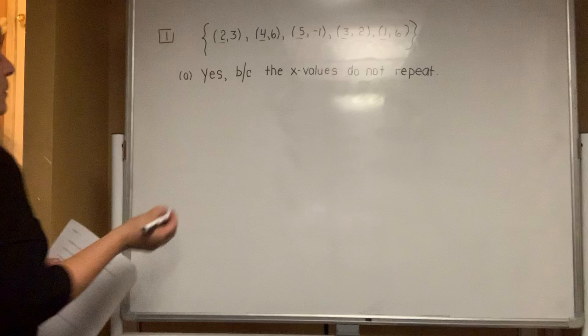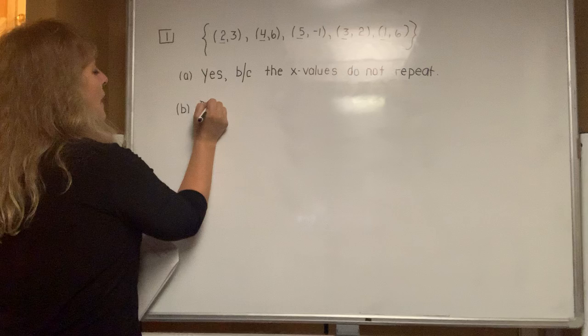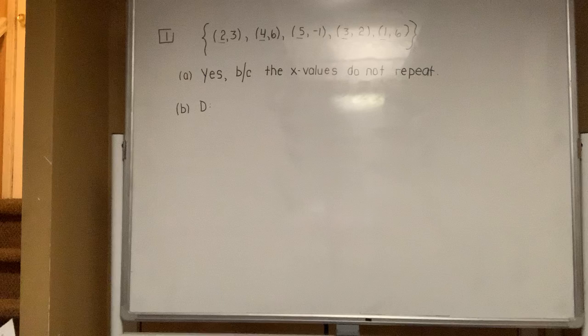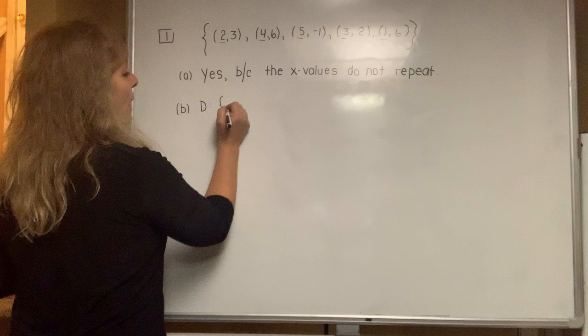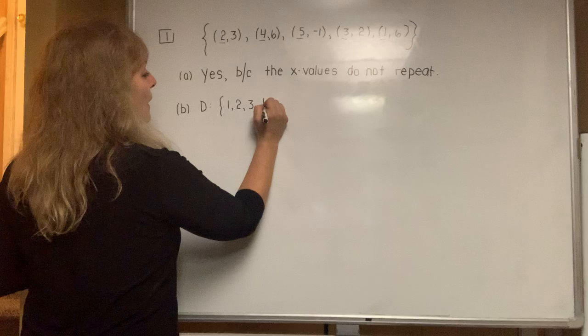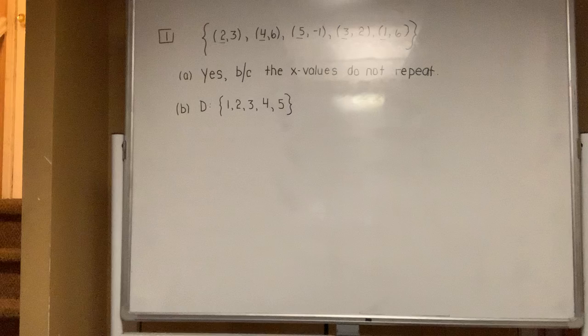Okay, part B, determine the domain of example number one. Now, when they want to know the domain, you're really just giving a list of the x values. And you put them in wavy braces, but you list them in numerical order. So the x values, I see a 1, there's an x value that is 2, there's an x value that is 3, there's an x value that is 4, and there is an x value that is 5. And that's how you write the domain.